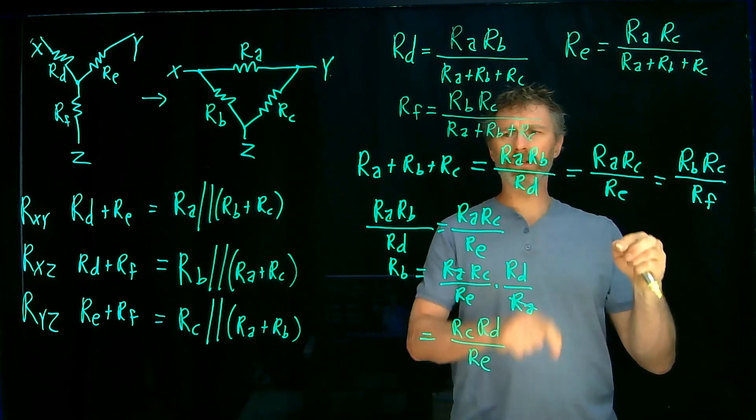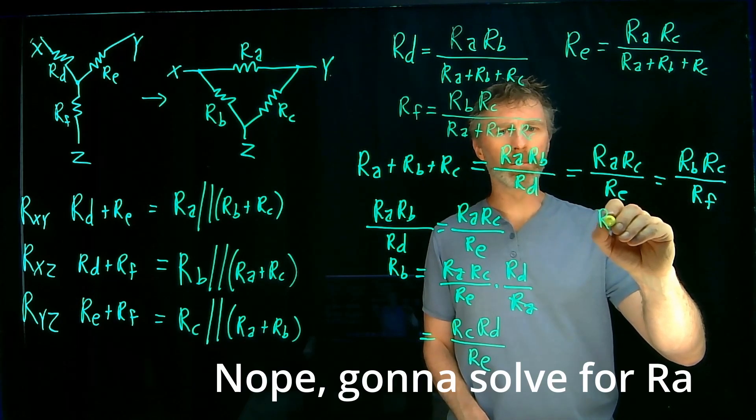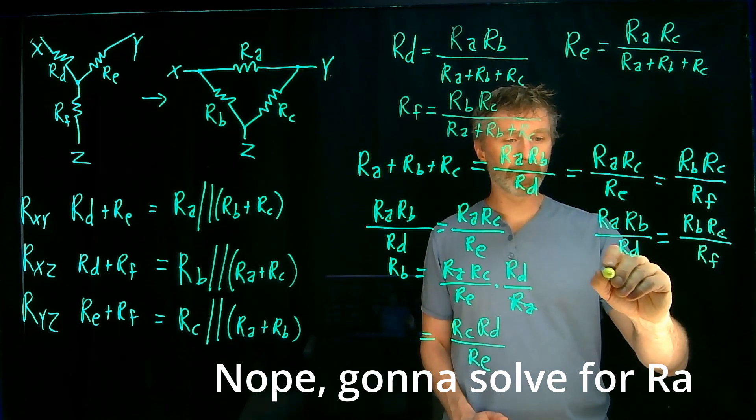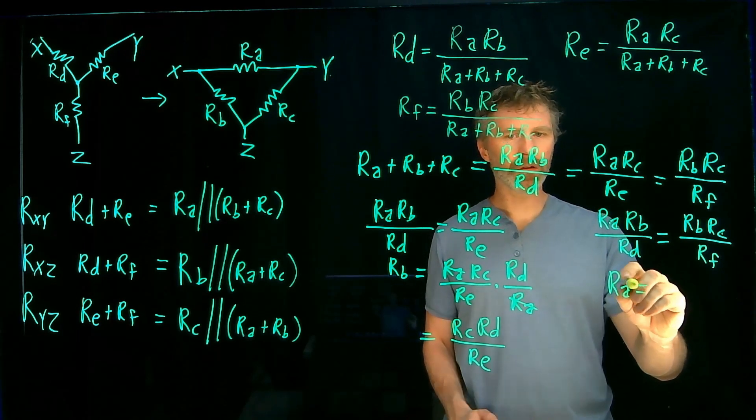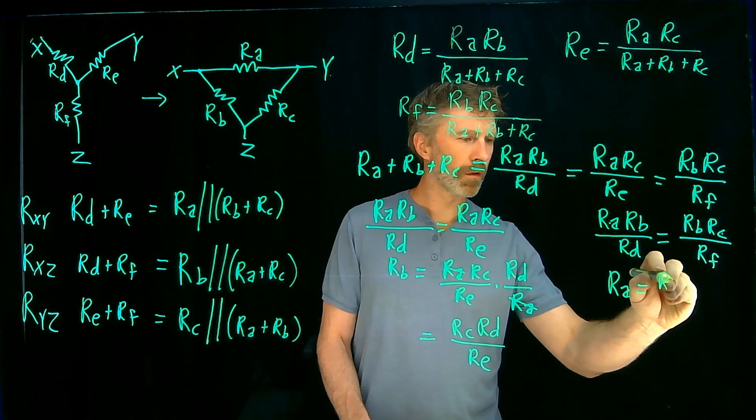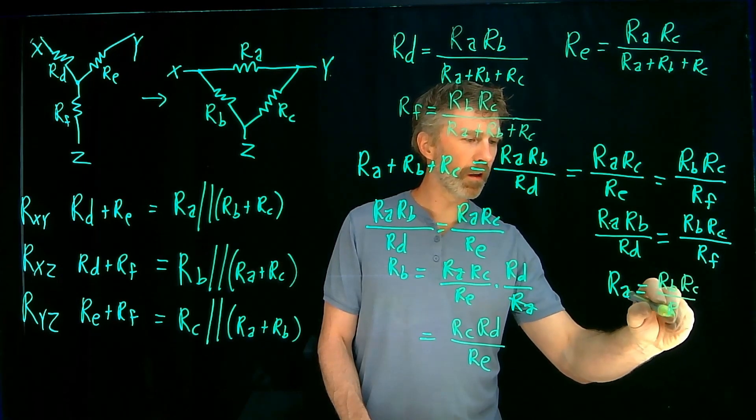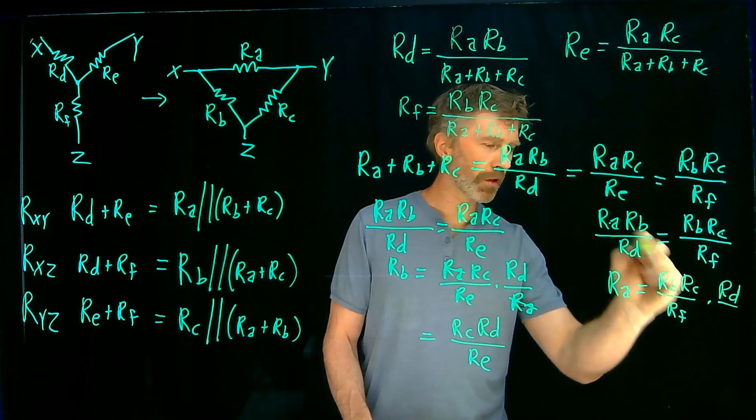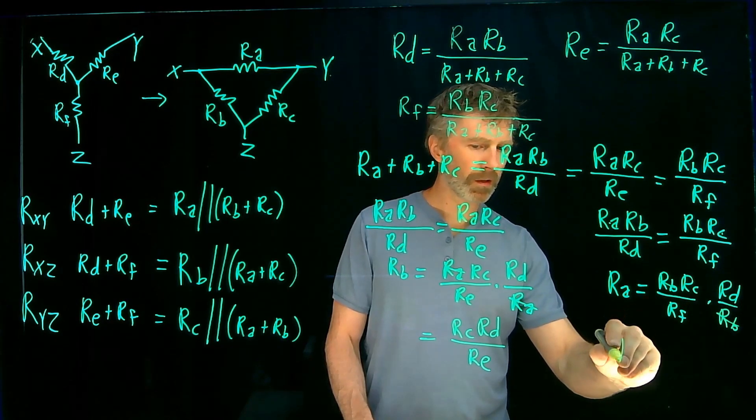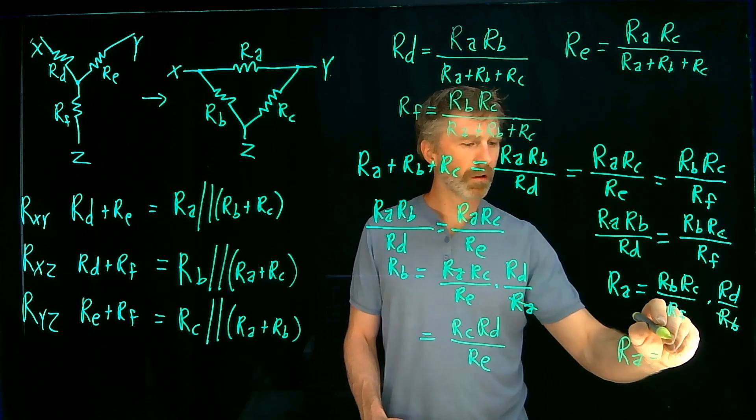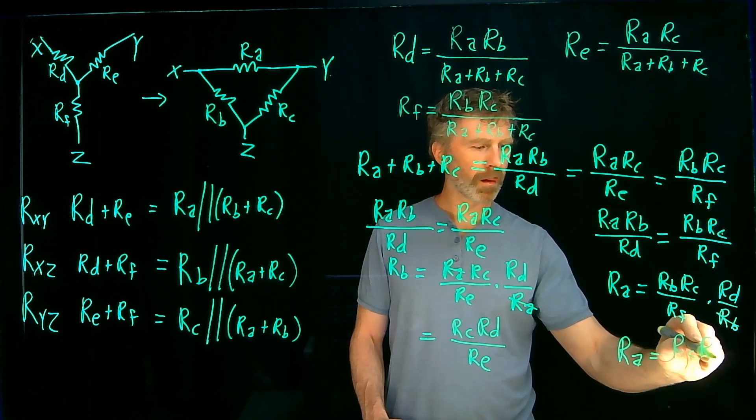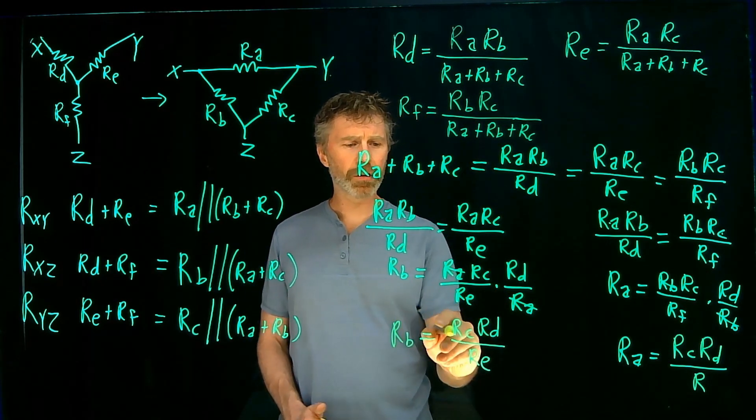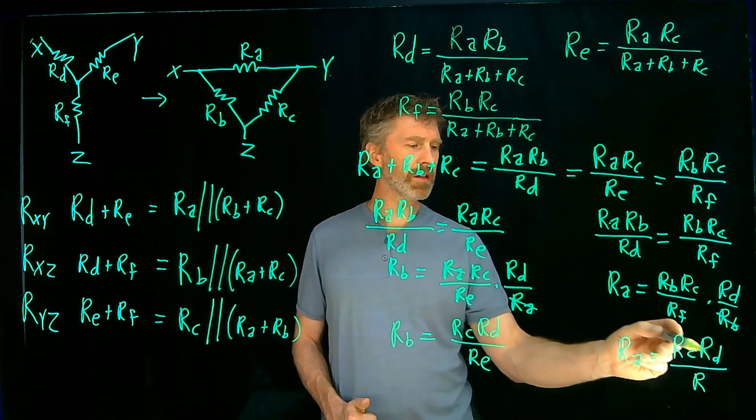And then similarly, I'll take those two expressions and solve for RB. Actually, I'm going to solve for RA. Okay, RA now is equal to RB, RC over RF times, bring RD over there, bring this RB down here. Those RBs cancel and we have RA is equal to RC, RD over RF.